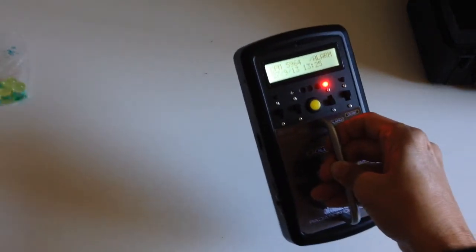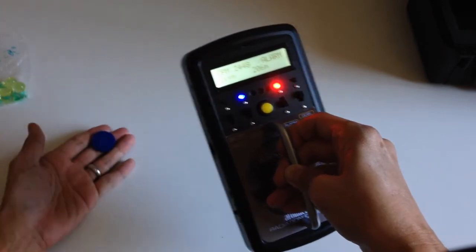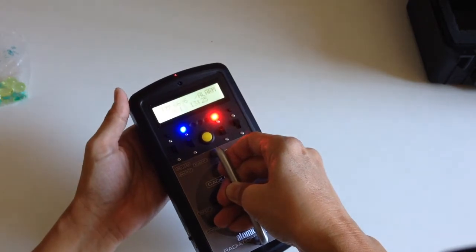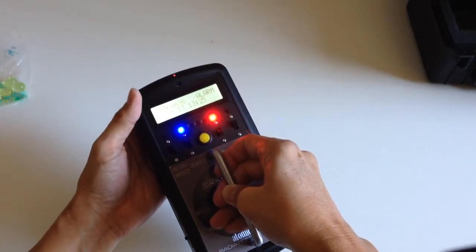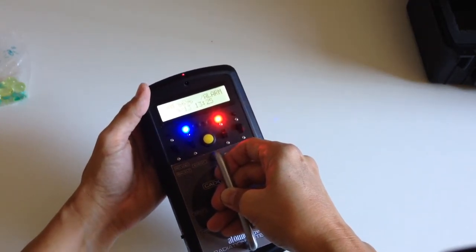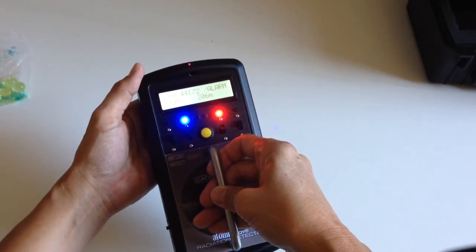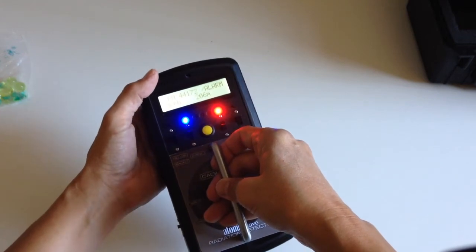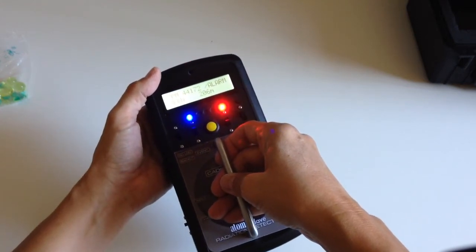Here's of course the cesium-137. I tuned this thing today so it's picking it up at about 45 to 50,000 CPM off of a cesium-137.